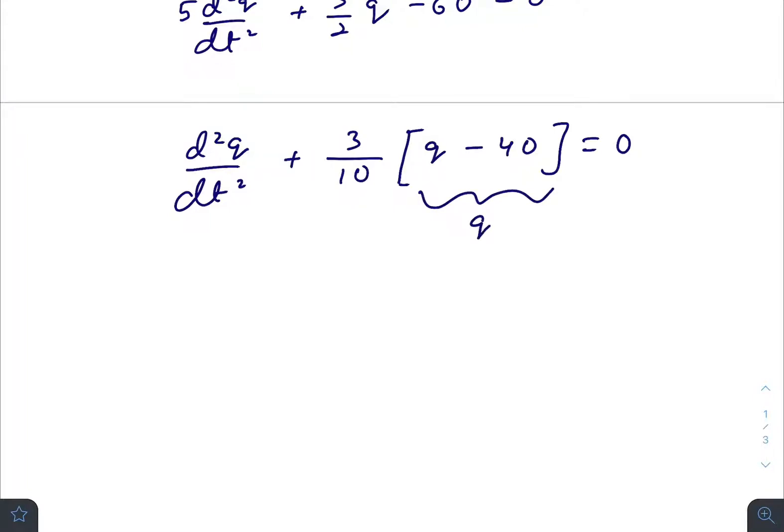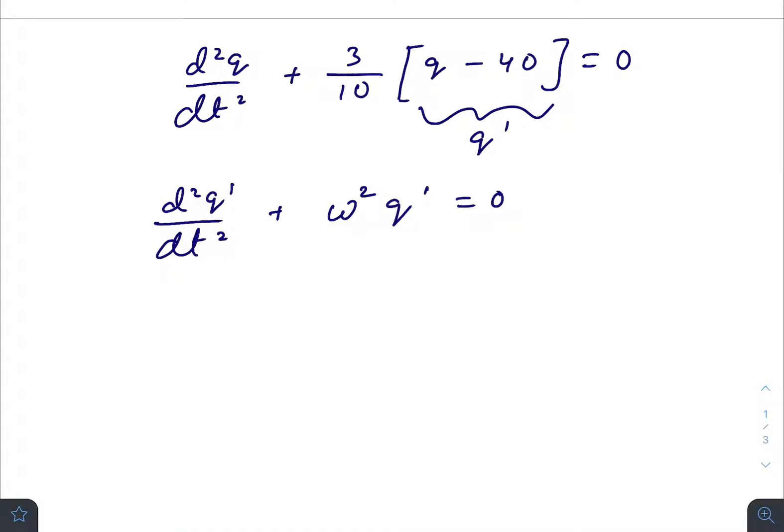Taking this whole term as q', we can write this differential equation. Let us take this as ω² so that we get a familiar differential equation. This differential equation looks like SHM, and we know the general solution is q' = A sin(ωt) + B cos(ωt), where q' is q minus 40. ω is nothing but √0.3 radians per second.